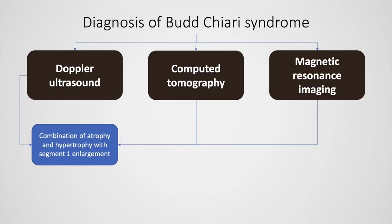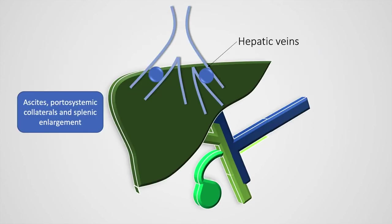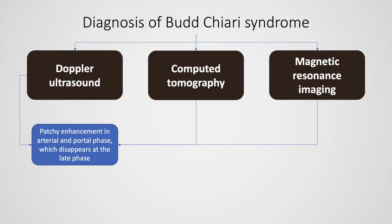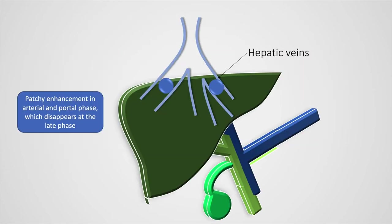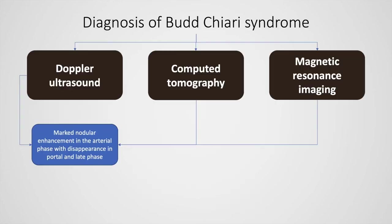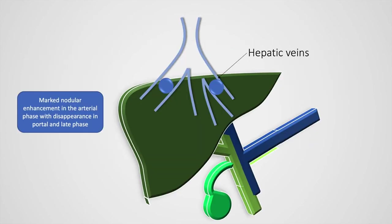There could also be a combination of atrophy and hypertrophy along with segment 1 enlargement. Furthermore, there could be ascites, portosystemic collaterals, and splenic enlargement due to back pressure changes resulting in splenomegaly. The liver may also show patchy enhancement in the arterial and portal phase which disappears in the late phase.